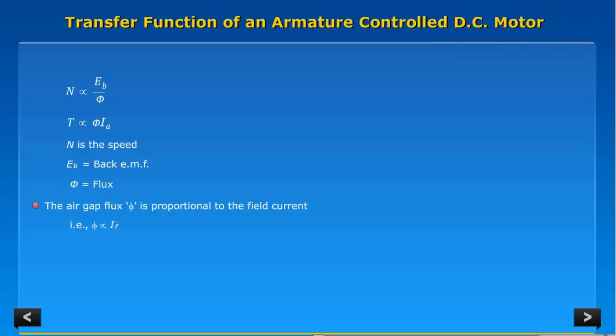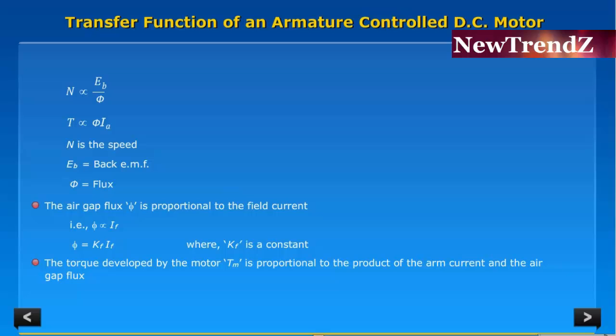That is, phi proportional to If, phi equals Kf times If, where Kf is a constant. The torque developed by the motor Tm is proportional to the product of the armature current and the air gap flux. Therefore, Tm equals Kf times Ka times If times Ia, where Ka and Kf are the constants.